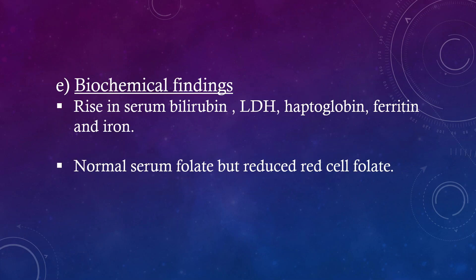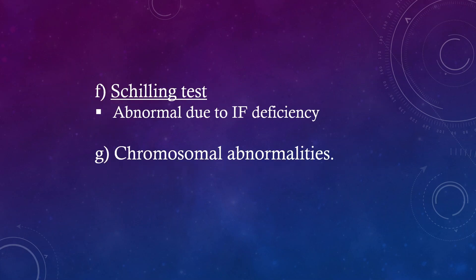Biochemical findings. Rise in serum bilirubin, LDH, haptoglobin, ferritin, and iron. Normal serum folate but reduced red cell folate. Schilling test is abnormal due to intrinsic factor deficiency. Chromosomal abnormalities may also be present.